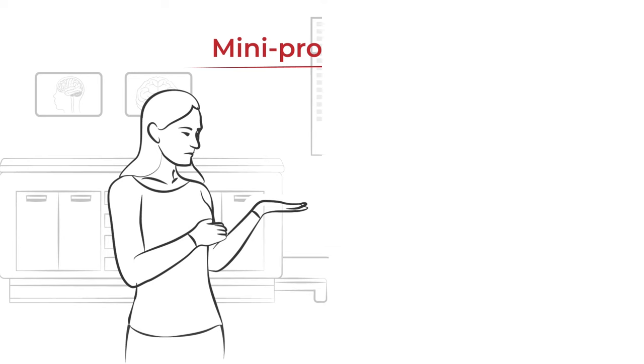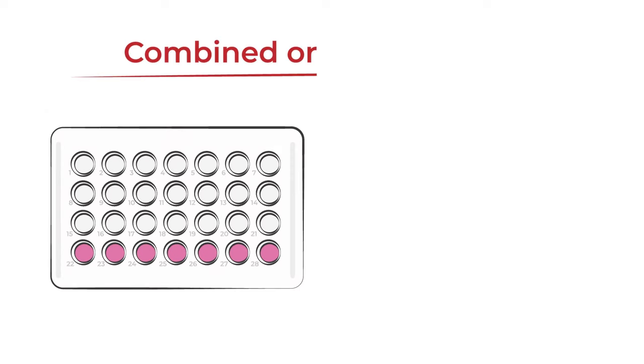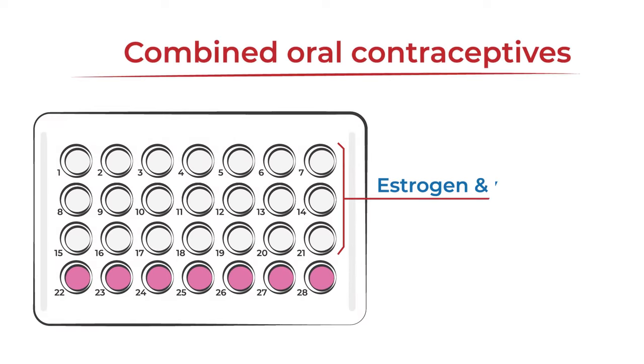Because of its effect on hormones, birth control can affect menstrual migraine. Combined oral contraceptives have 21 pills with supplementary estrogen and progestin, and then 7 placebo pills.